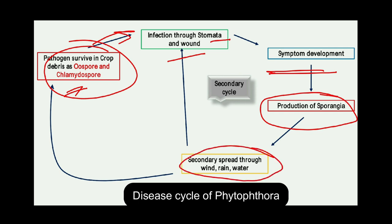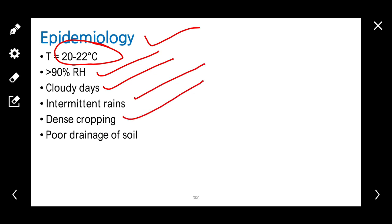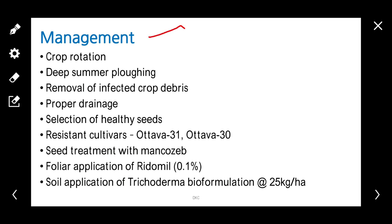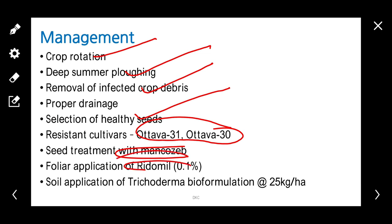Coming to epidemiology, it requires temperature between 20 to 22 degrees centigrade, more than 90% relative humidity, cloudy days, intermittent rain, dense planting, and poor drainage of soil. For management, we should adopt integrated disease management practices such as crop rotation, summer deep plowing, removal of infected crop debris, proper drainage of the field, selection of healthy seeds, growing resistant varieties like Ottawa 31 and Ottawa 30, seed treatment with Mancozeb, foliar application of Ridomil (which is a combination of Metalaxyl and Mancozeb), and soil application of Trichoderma.